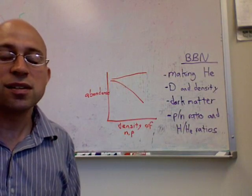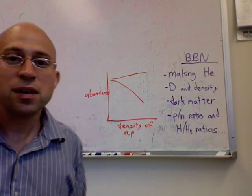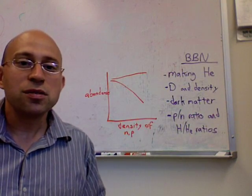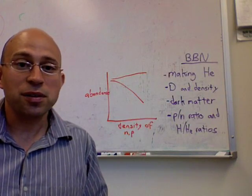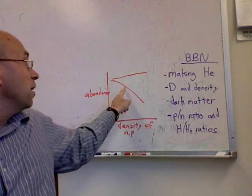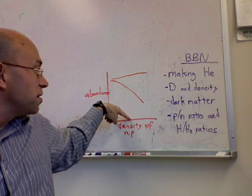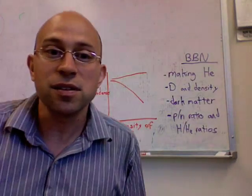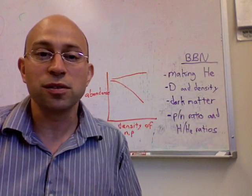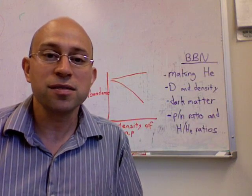For helium-4, which is the end product, it actually increases somewhat fairly slowly as the density increases. What we can do is we can actually try to measure the abundance of deuterium and then using that measurement we can just look down here on this axis and see what was the density of neutrons and protons in the early universe.